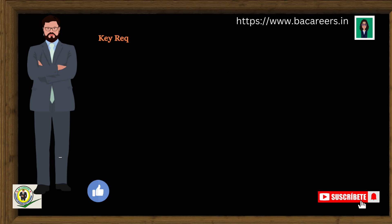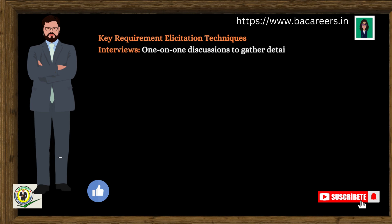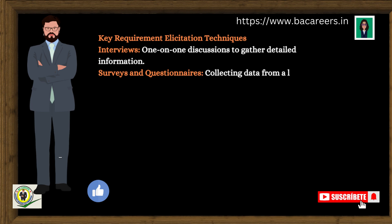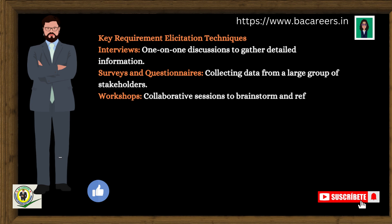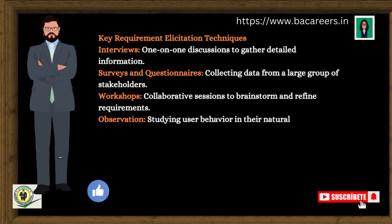Key requirement elicitation techniques include: interviews — one-on-one discussions to gather detailed information; surveys and questionnaires — collecting data from a large group of stakeholders; workshops — collaborative sessions to brainstorm and refine requirements; and observation — studying user behavior in their natural environment.